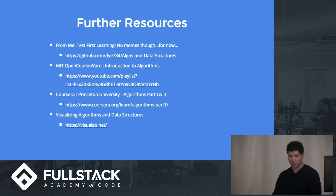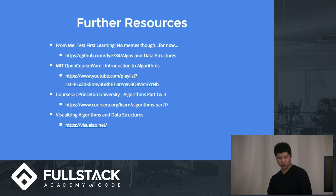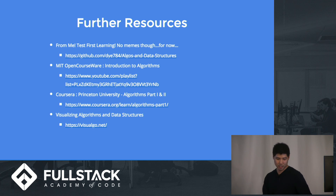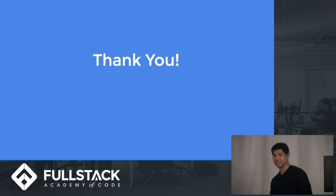These are a few further resources. Shameless plug — this is my GitHub repo with algorithms and data structures implementations, including a bunch of test specs so you can do test-first learning. Another resource is MIT OpenCourseWare Intro to Algorithms. You can also check out Princeton University's Algorithms Parts 1 and 2 on Coursera, implemented in Java — which is actually what I used as a reference for my own repo. And for visualizing algorithms and data structures, check out visualgo.net, where you can see how things actually move throughout the binary heap. That's it — thanks, I hope you learned how to implement a binary heap!